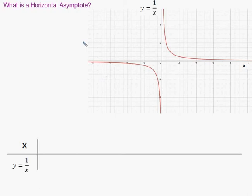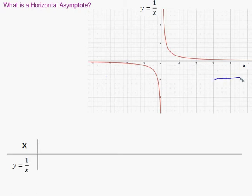In this video I hope to explore what a horizontal asymptote is. Here I'm given a rational function and my goal is to find the equation for the horizontal asymptote — that is, the equation for the horizontal line that this graph appears to approach as x gets very large in the positive direction and very large in the negative direction.